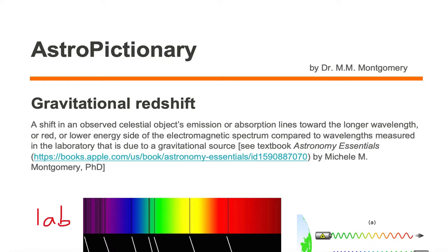Gravitational redshift is a shift in an observed celestial object's emission or absorption lines towards the longer wavelength, or red, or lower energy side of the electromagnetic spectrum compared to wavelengths measured in the laboratory that is due to a gravitational source.